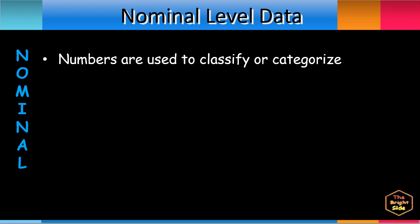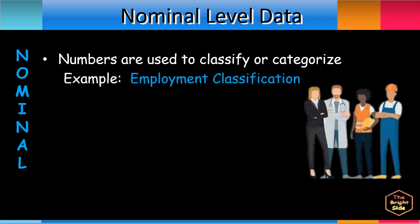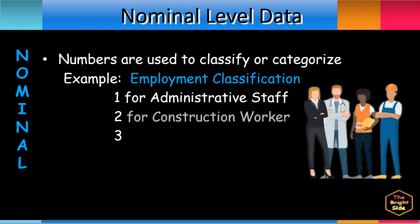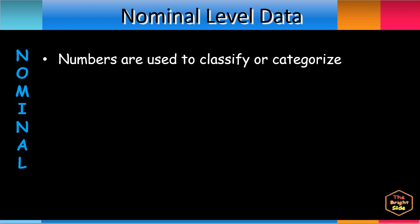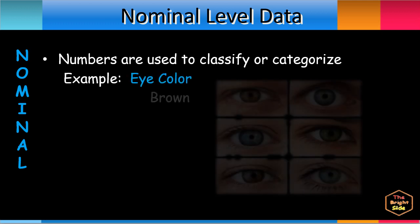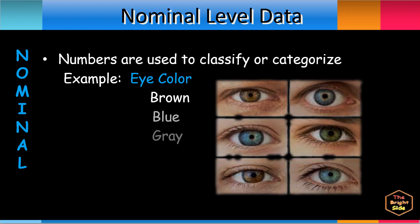Another example is employment classification. The numbers 1, 2, and 3 may be assigned to the nominal data such as administrative staff, construction worker, and manufacturing worker, respectively. Lastly, eye color characteristic can have nominal data values such as brown, blue, grey, and green. And these can have numerical assignments of 1, 2, 3, and 4 respectively.